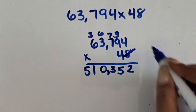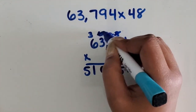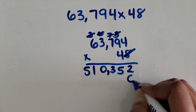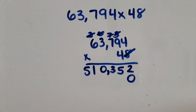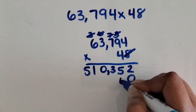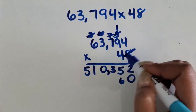Done with the ones place. I'm going to get rid of all of the numbers that I regroup, put a zero as a placeholder. 4 times 4 is 16. Regroup the 1.